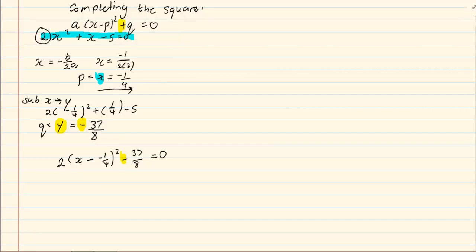Now we solve for x using our square root. I am going to have 2 into x plus a quarter because a negative and a negative would equal to a positive. All squared is equal to 37 over 8.